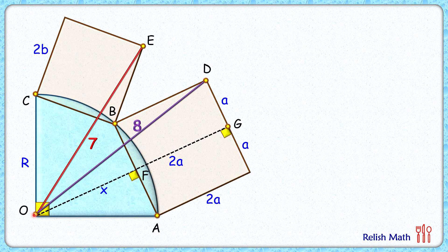Now if you look at this triangle ODG, applying Pythagorean theorem we get (x + 2a)² + a² = 8². Opening up the bracket we get x² + 4a² + 4xa + a² = 64.